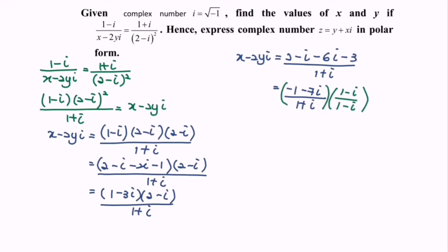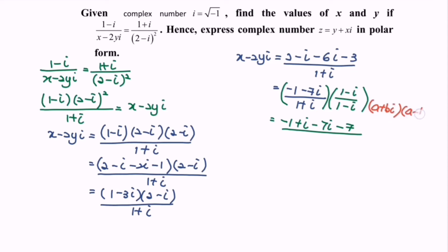So kindly expand the expression: negative 1 plus i minus 7i minus 7. Kindly apply the formula where we have a plus bi multiply with a minus bi equals a squared plus b squared. For this case, a and b are both equals to 1, so we will have 1 plus 1.